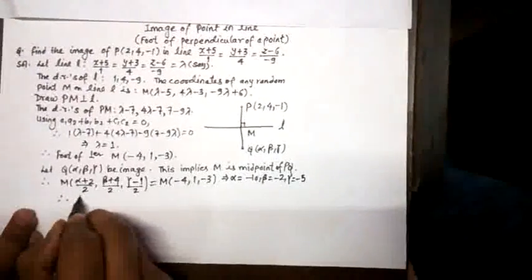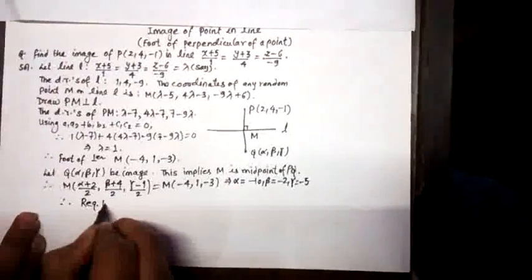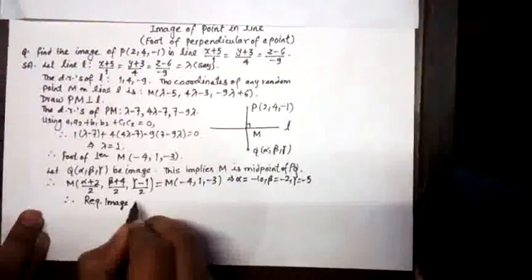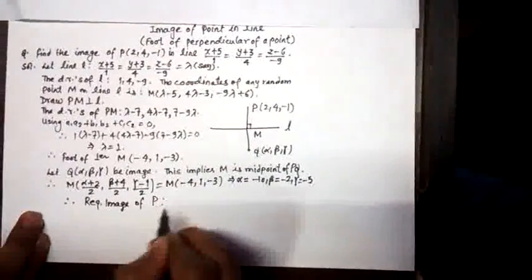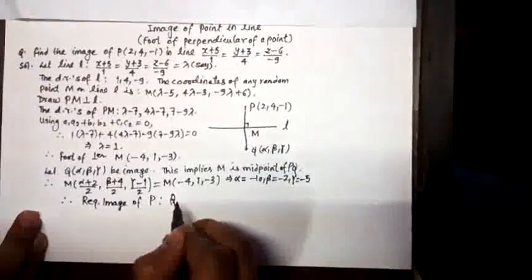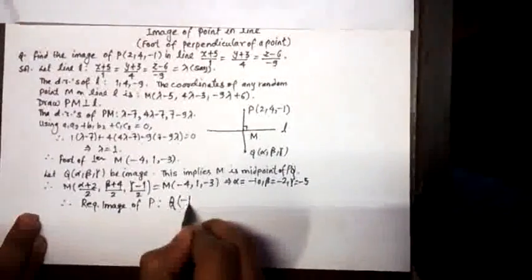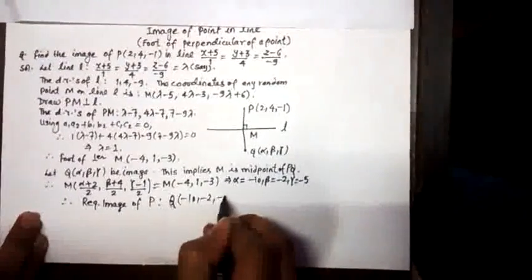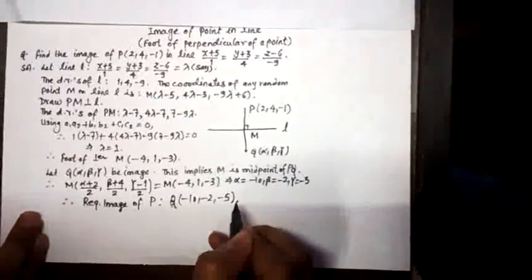So the required image of point P in the line will be Q(-10, -2, -5). That is all we have today.